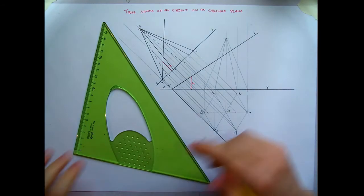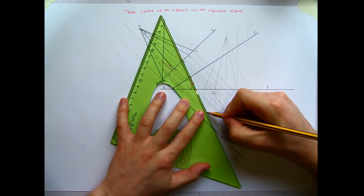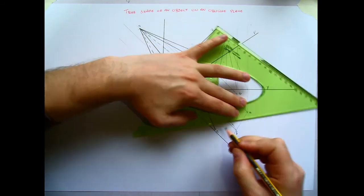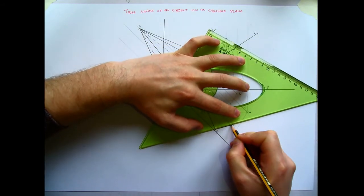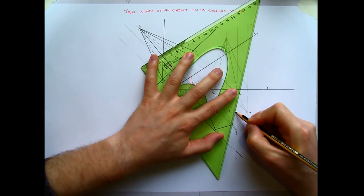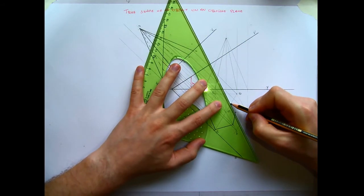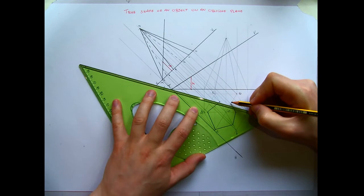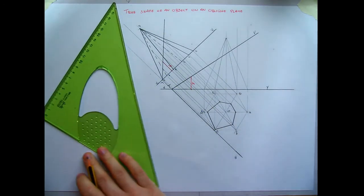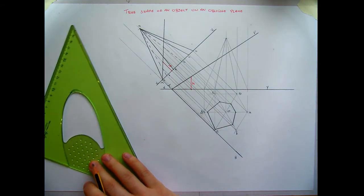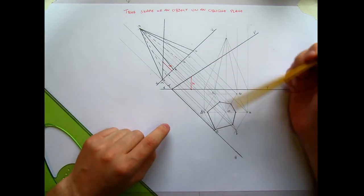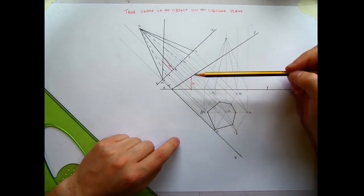Once I have all of those found in plan, all I'm going to do then is join all of them up together. And that's going to give me what the cut surface looks like in plan. So it's still not the total object cut, but it is what it looks like in plan.